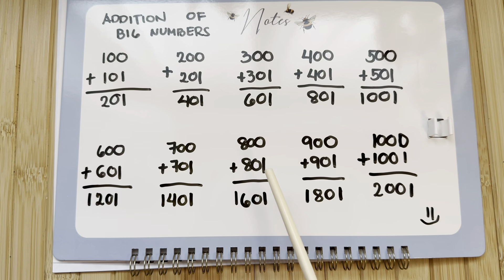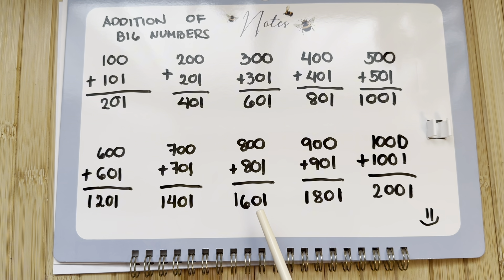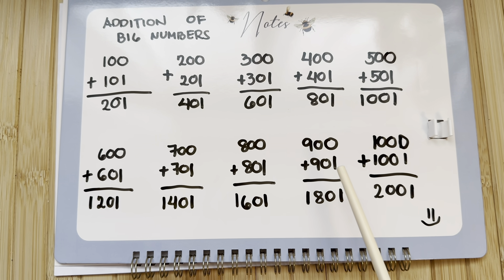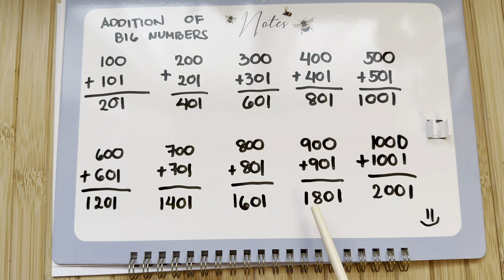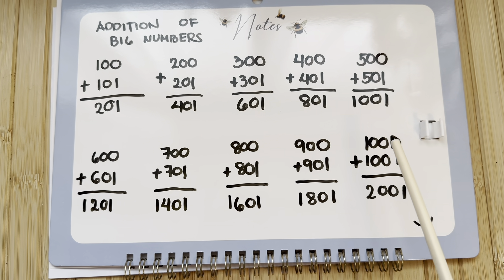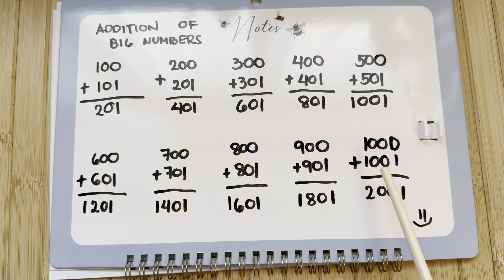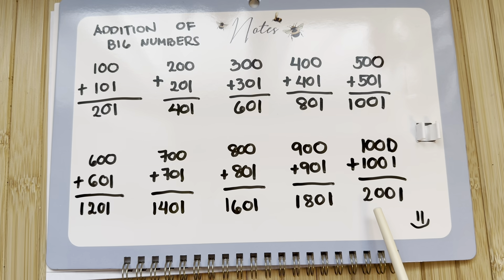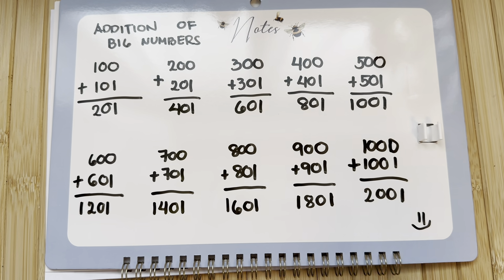800 plus 801 equals 1,601. 900 plus 901 equals 1,801. And 1,000 plus 1,001 equals 2,001.